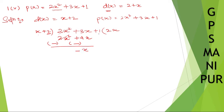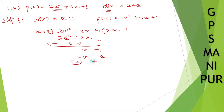Bring 1 down, so we have minus x plus 1. Now what do you multiply x by to get minus x? x into minus 1 gives minus x. And 2 into minus 1 gives minus 2. Change sign: minus becomes plus, minus becomes plus. These two cancel, and minus 2 plus 1 gives plus 3. This is your remainder.